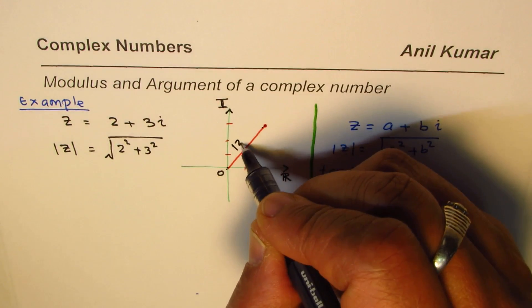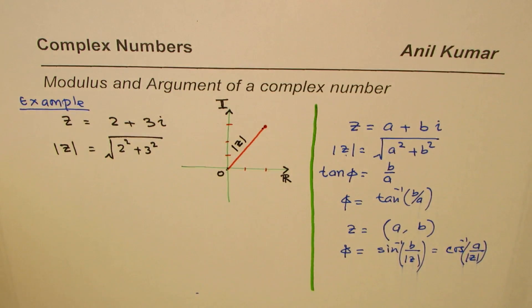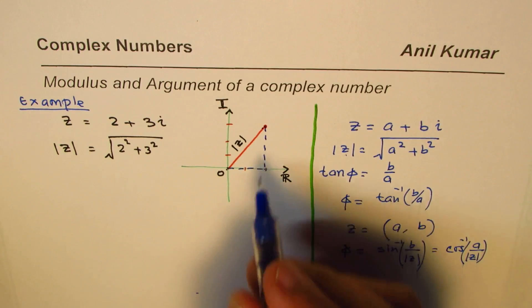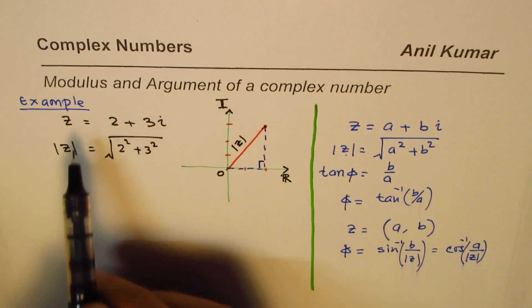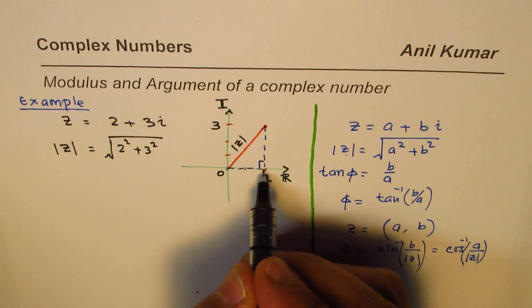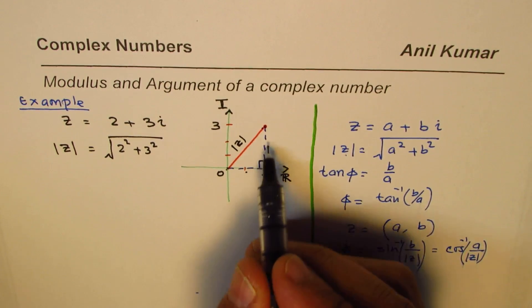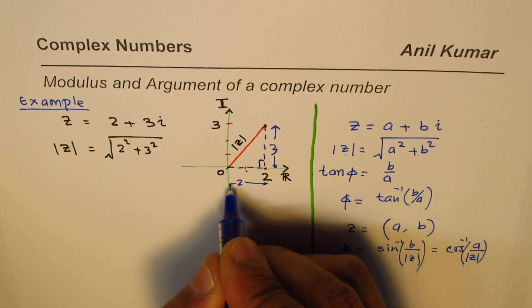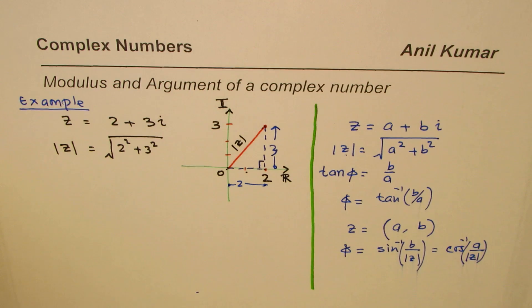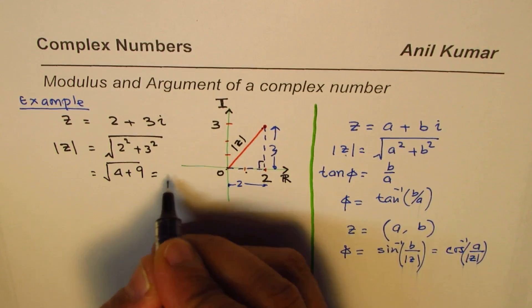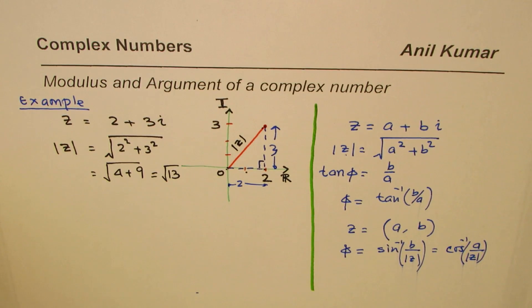We need to find this length — the absolute value, which gives us the modulus. The easy way is using the Pythagorean theorem. If I drop a perpendicular and make a right triangle, the real part gives a horizontal length of 2 and the imaginary part gives a vertical length of 3. So |z| equals √(2² + 3²) = √(4 + 9) = √13.